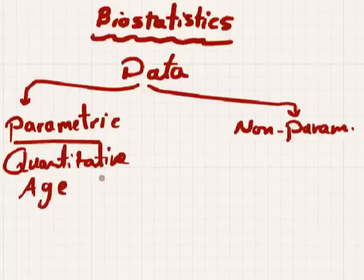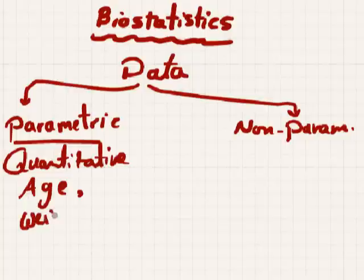For example, when I ask 'How old are you?' you say 'I'm 26' or 'I'm 31' and so on. So parametric data looks like age, weight, height, and so on.